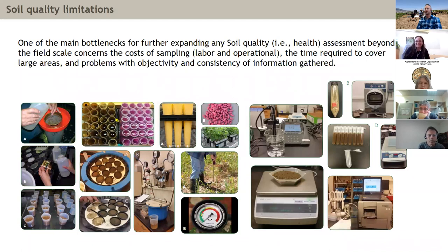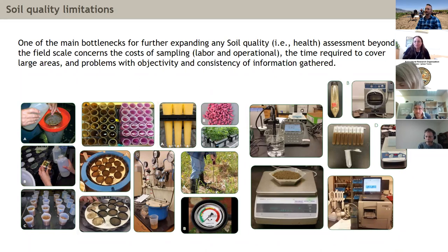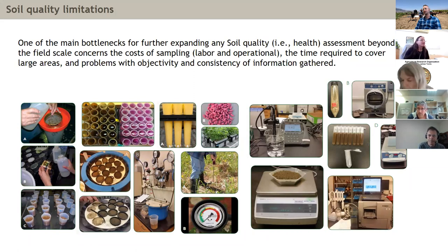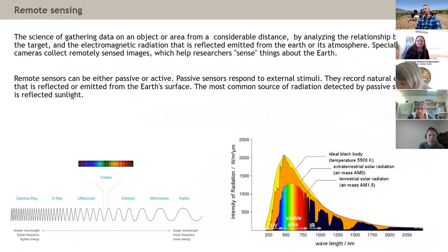The problem arises when we want to take soil quality or soil health assessment beyond the field scale. We need tools that assist us at the regional scale. Developing soil health assessments is time-consuming and expensive — usually measuring between 10 to 20 soil properties per soil sample and requiring extensive lab and field work. This is where remote sensing comes into the frame.